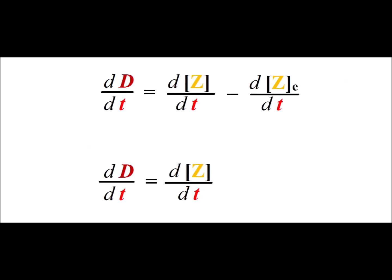Now, using the definition of big D, which is the current concentration of z minus its equilibrium concentration, we arrive at an expression for the change in big D per unit time. We notice that the term after the minus sign is the rate of change of a constant, so that particular derivative is equal to zero, and we note that the change in big D equals the change in the concentration of z per unit time.